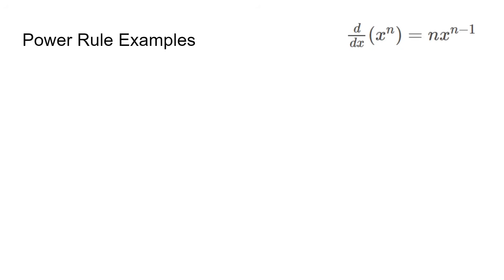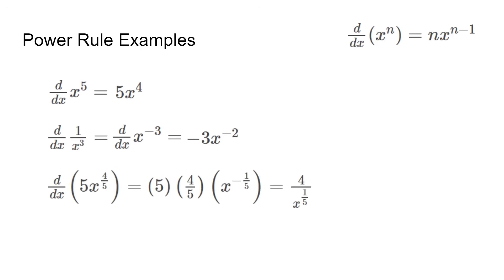Let's do some examples. With x to the 5th, we can multiply by 5, then subtract 1 to the power. We get 5x to the 4th. If we have a fraction, we can rewrite it as a negative power, and do the same steps. Multiply by negative 3, then change the power to negative 2 by adding 1. The same applies for fractions, and also when there is a constant.